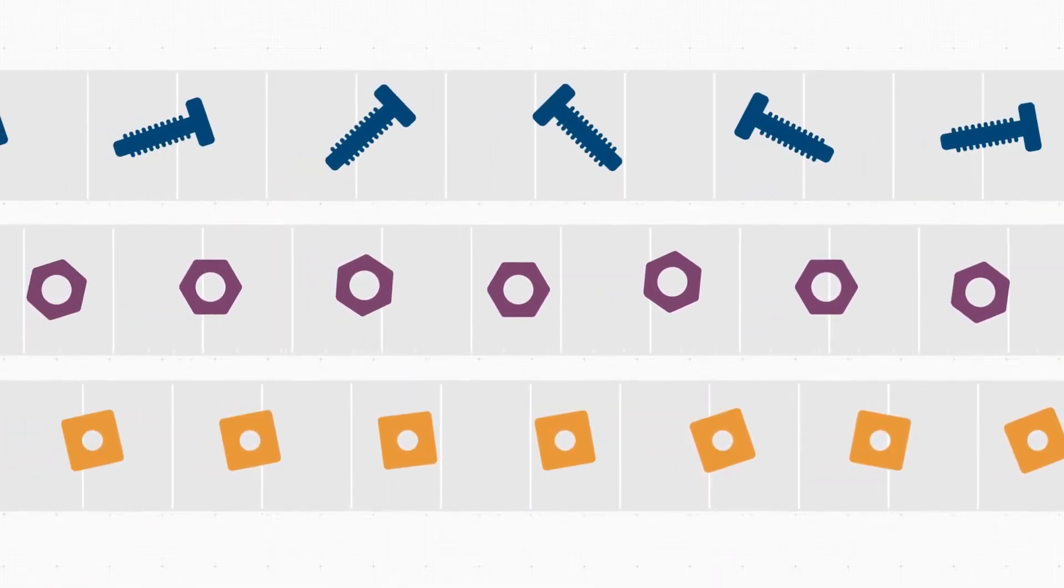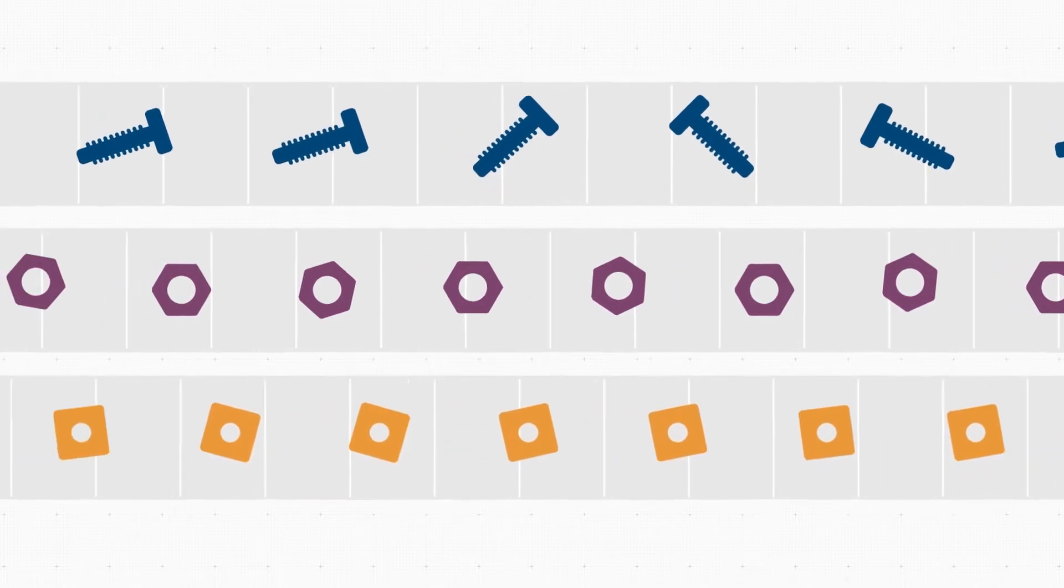Parts feeders for hardware, such as nuts, bolts, and other small parts, are commonplace for automation assembly systems.